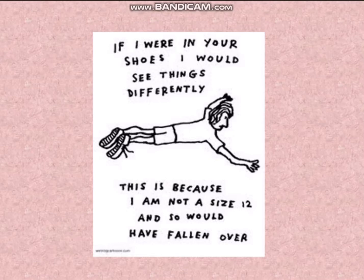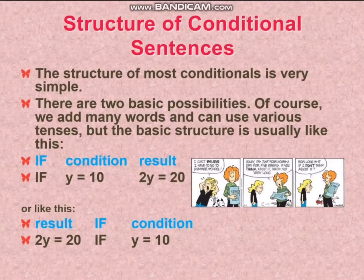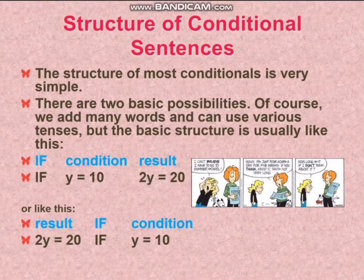For example, if I were in your shoes, I would see things differently. This is because I'm not a size 12 and so would have fallen over. So when we learn conditionals, we are to think about the structure of conditional sentences. In fact, the structure of most conditionals is very simple. There are two basic possibilities. Of course, we add many words and can use various tenses, but the basic structure is usually like this: If, condition, result. Or like this: Result, if, condition.